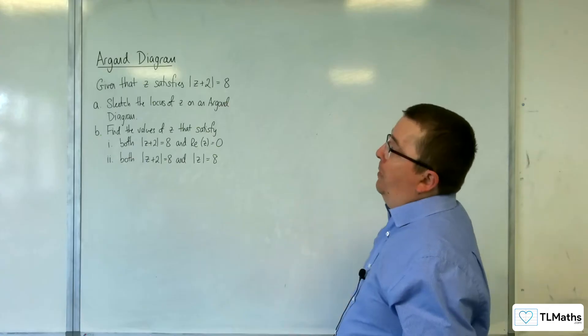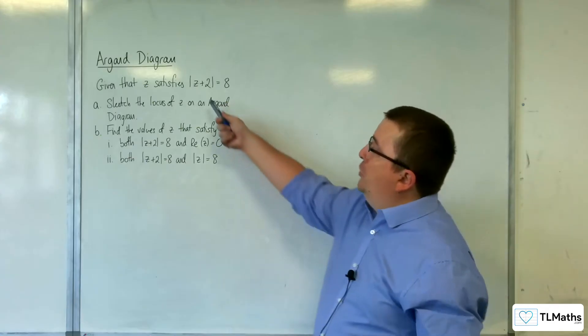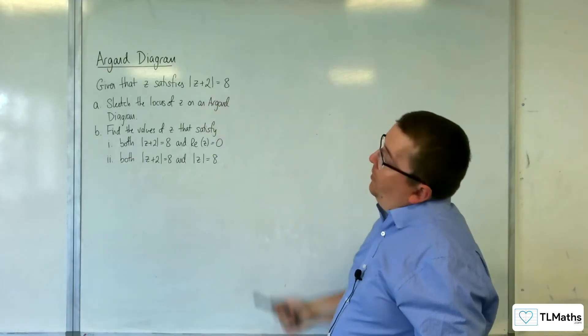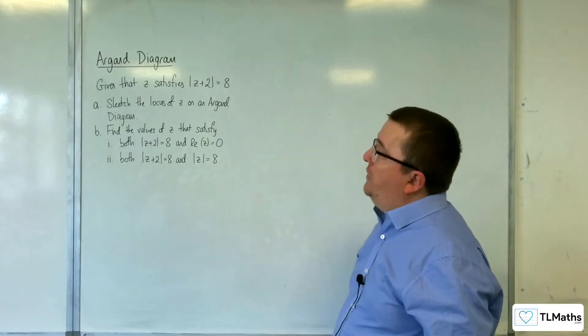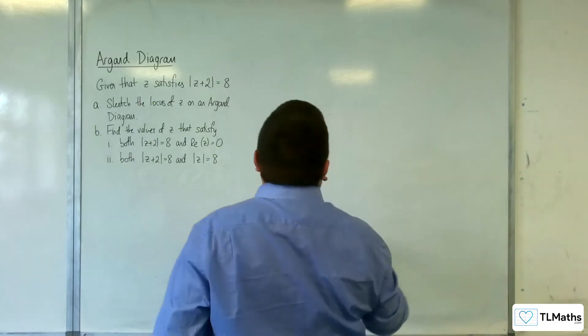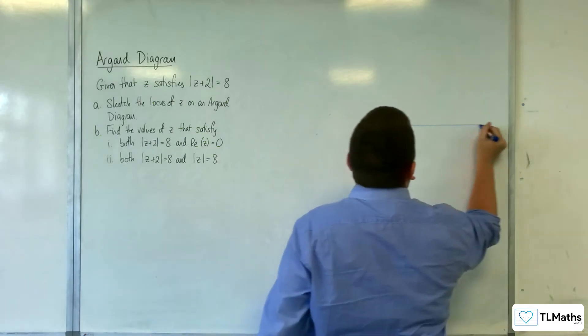In this video, we're going to be going through this problem. Given that z satisfies the modulus of z plus 2 is equal to 8, part a, sketch the locus of z on an argand diagram. OK, so this is going to be a circle.